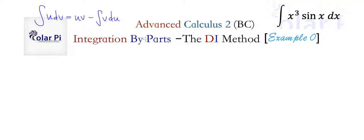The part we pick to be U is the part we differentiate — that's the D in the DI method. The part we pick to be DV is the part we integrate to get V — that's the I part of the DI method. So D is the part we differentiate, and I is the part we integrate.